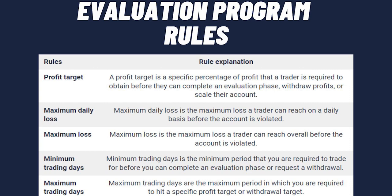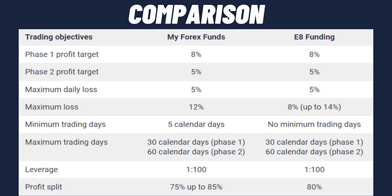Now let's compare My Forex Funds to two other industry-leading prop trading firms. First up is E8 Funding's two-step evaluation. Both programs share the same profit targets — 8% in Phase 1 and 5% in Phase 2 — and both have a 5% maximum daily loss limit. However, the maximum loss limit differs significantly: My Forex Funds allows 12%, while E8 Funding allows only 8%.